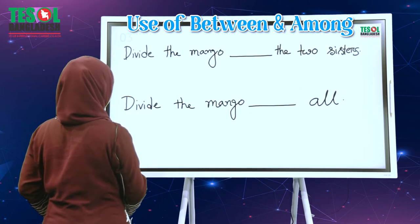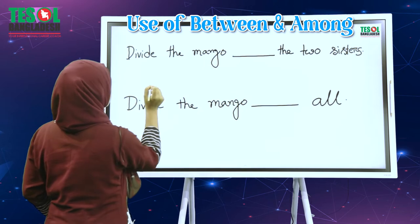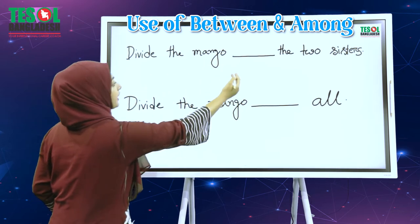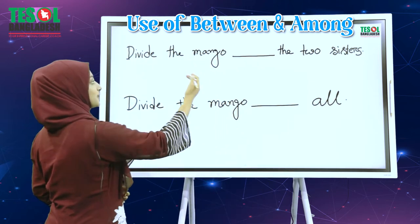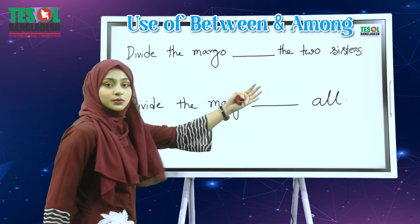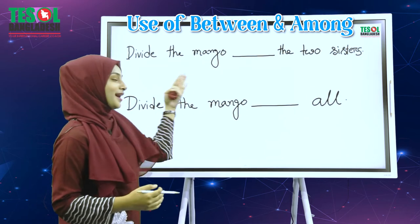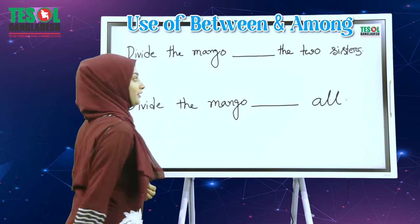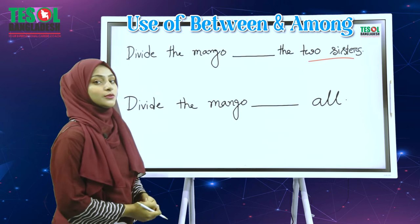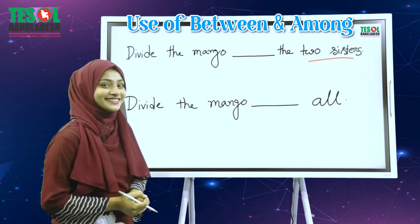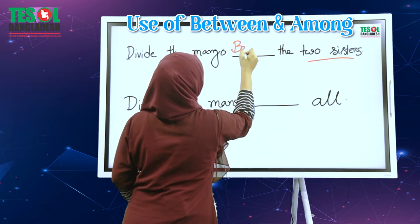Cholun example dekha jak. Ekhanei aachhe first example: divide the mango ___ the two sisters. Ekhanei bola hoxhe dujer boner moddhe aamti bhaag kore dao — two people, mannei two sisters. Dujeroner moddhe bujhano hoxhe, so obviously ekhanei 'between' habai.